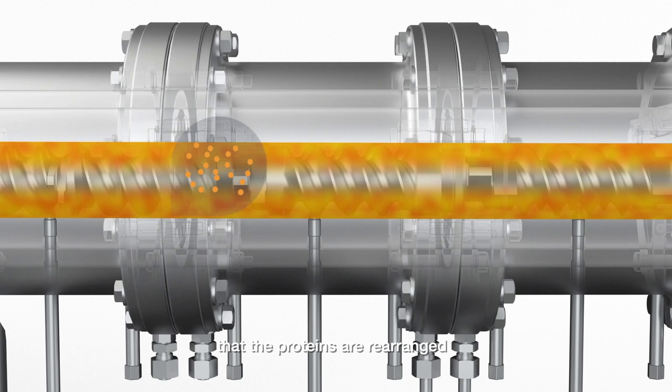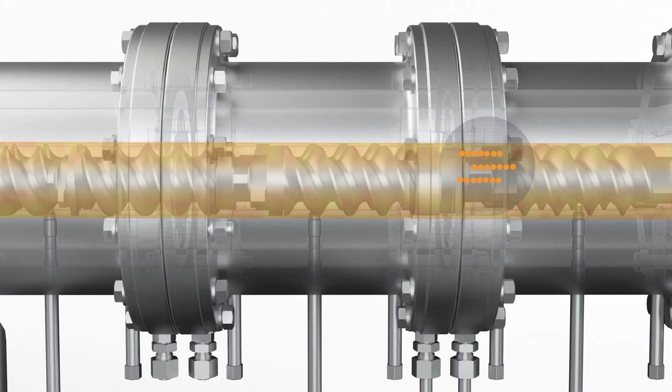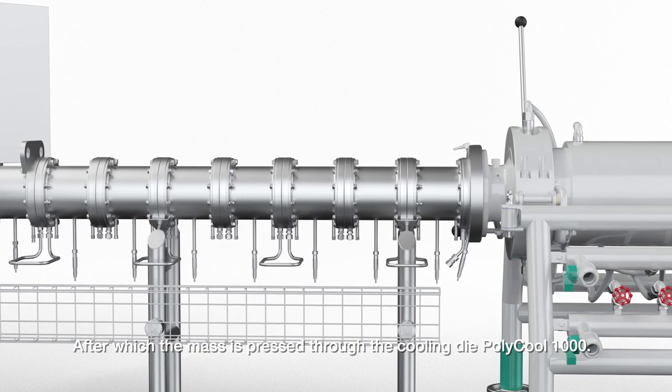Shearing forces, temperature, and pressure ensure that the proteins are rearranged from a globular structure to a fibrous one, after which the mass is pressed through the cooling die Polycool 1000.